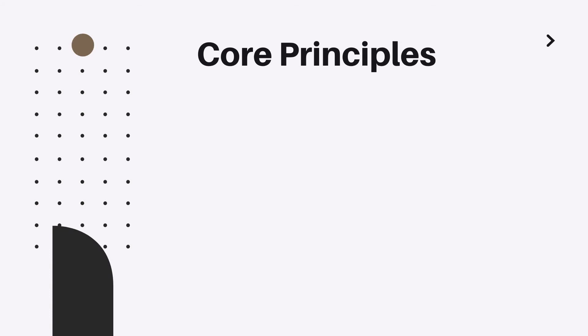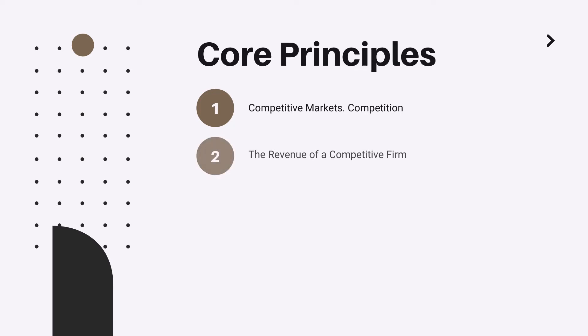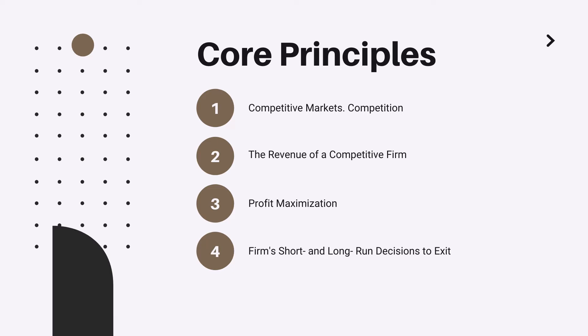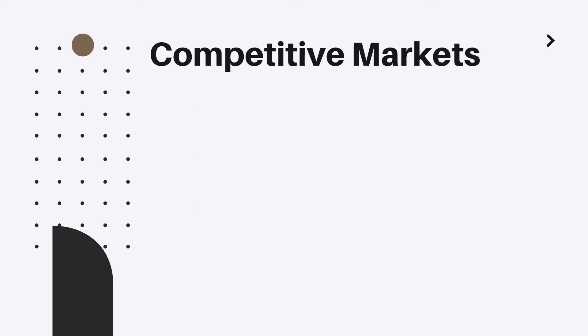Hi everyone, and welcome to the revision of Chapter 14: Firms in Competitive Markets. Today we will speak about competitive markets and competition in general, revenues of firms in competitive markets, profit maximization techniques, firms' short and long-run decisions to exit or shut down, and finally supply curve changes and fluctuations in a competitive market.